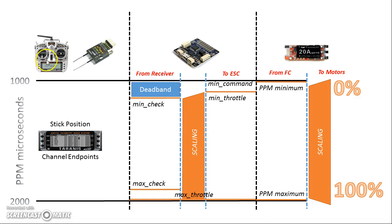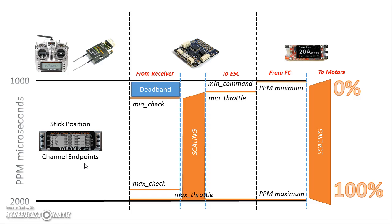We start with the stick position on the transmitter, and that stick position goes from bottom to top — minus 100 to 100 — mapped to an output value of 1,000 to 2,000 microseconds PPM timing. Those endpoints of that channel are defined in your transmitter, and if you have a transmitter like the Taranis, you can adjust those quite a bit. When working with servos, adjusting endpoints affects the amount of throw the servo has, so adding an extra 20% is a big deal.